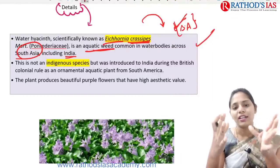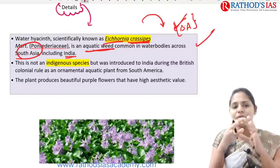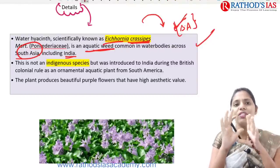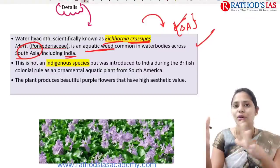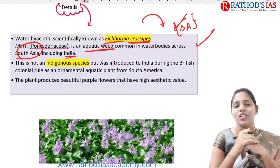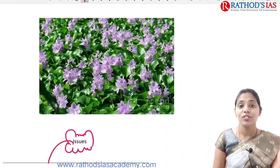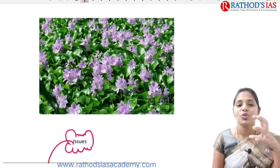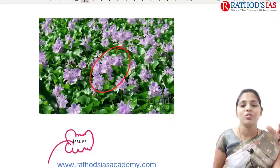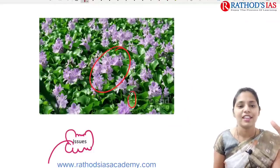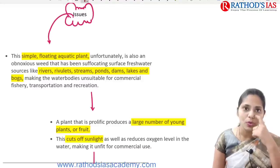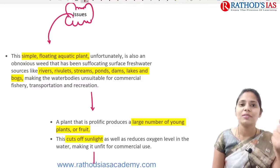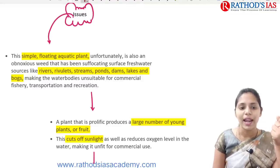We brought water hyacinth from South America because it looks very beautiful with purple flowers and has high aesthetic value. Now it is an invasive weed in water bodies in India. You can see the purple flowers on screen — they look very nice and pleasant. Water hyacinth is a simple floating aquatic plant.